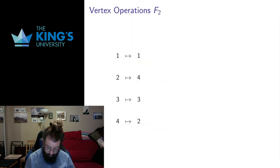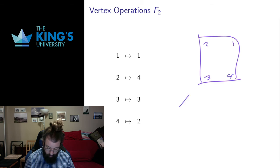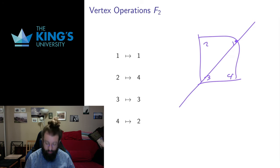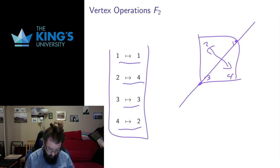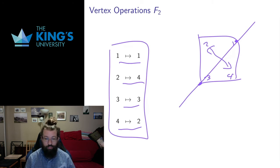I also have vertex operations for F2. F2 is reflection over the diagonal line through vertices 1 and 3. Since 1 and 3 are on the line, they don't change. But 2 and 4 get switched: 1 stays at 1, 3 stays at 3, 2 goes to 4, and 4 goes to 2. That's the vertex operation of F2 — a nice succinct way of encoding these operations, which I can use to calculate compositions.